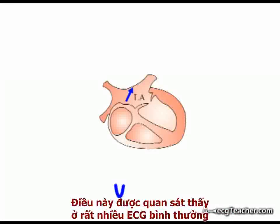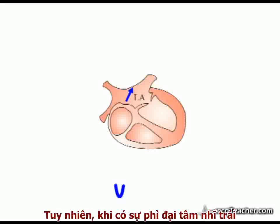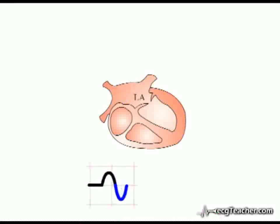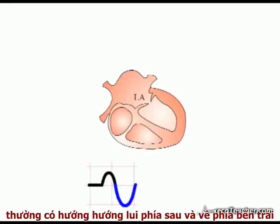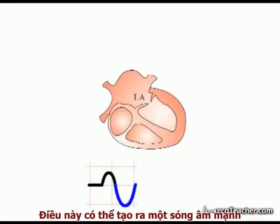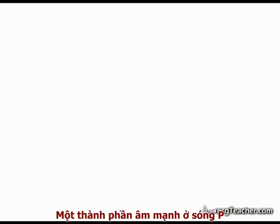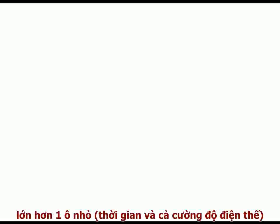This is observed in many normal ECGs. However, in the presence of left atrial enlargement, this finding can be dramatically exaggerated. Enlargement of the chamber is usually directed posteriorly and to the left, and this can result in a very prominent negative terminal component to the P-wave in Lead V1. A negative P-wave component in Lead V1 greater than one small square in width and depth is suggestive of left atrial enlargement.